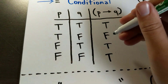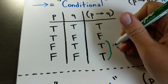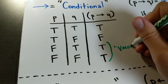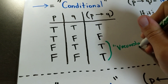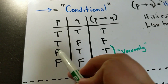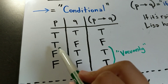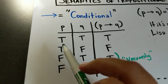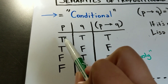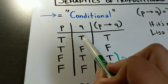The remaining rows are assigned true because it's vacuously true. Since P is false, it doesn't matter what Q is. The only thing that the conditional cares about is when P is true — in that circumstance, Q must always be true.